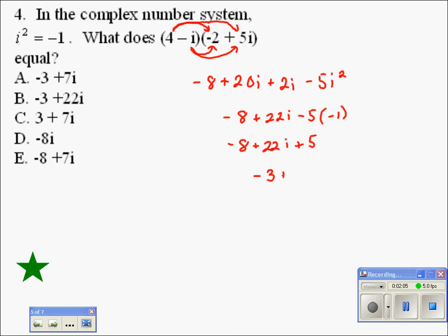And the 22i, the i acts like a variable here. It cannot be combined with a number. So our final answer is negative 3 plus 22i. Option B.